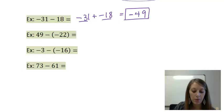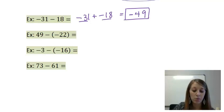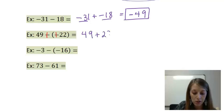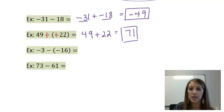My second example has minus a negative — that's a double negative. It works just like in the English language: two negatives together cancel out and make it a positive. Same thing in math — two negatives cancel each other out and make it positive. So this becomes 49 plus 22. They're both positive, so we just add them. That gives me 71, and my final answer is positive 71.